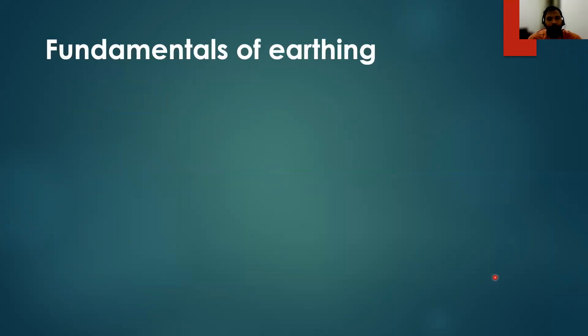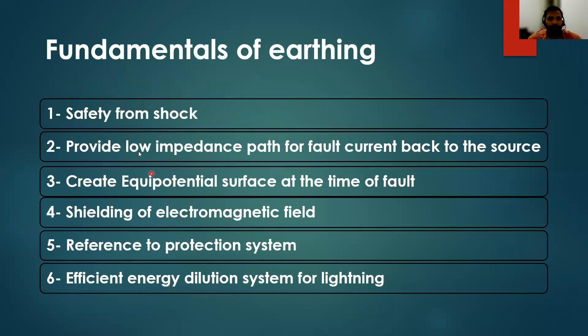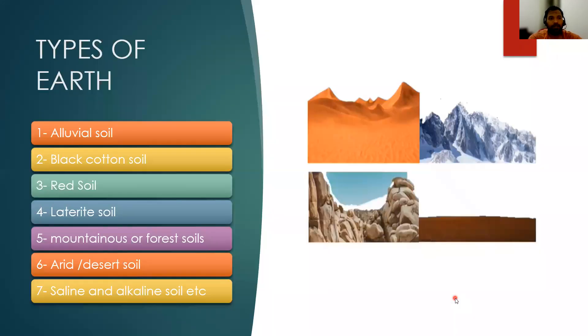First, the fundamentals of earthing. Why we need earthing? Basically, I will explain you a little bit. Safety from shock, provide low impedance path for fault current and create equipotential surface at the time of fault, shielding of electromagnetic field, reference to protection system, efficient energy dissipation system for the lightning system. These are the fundamentals.